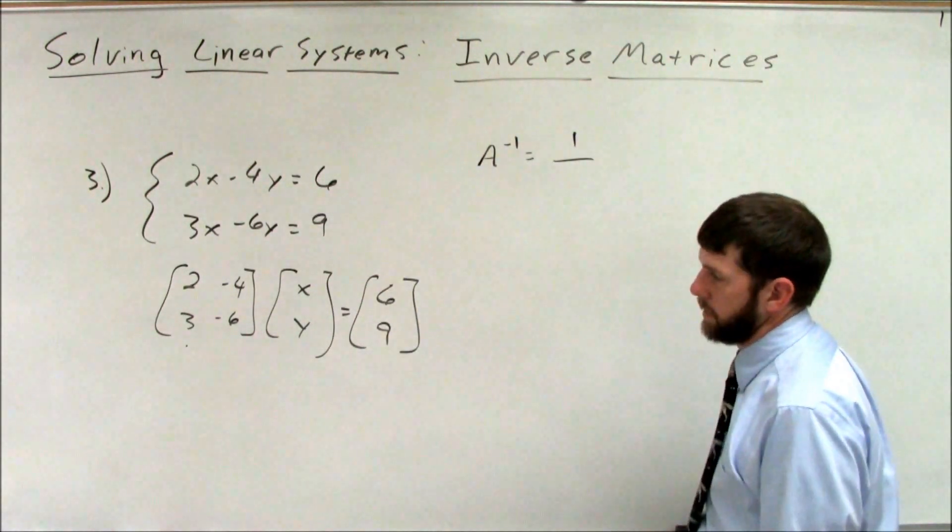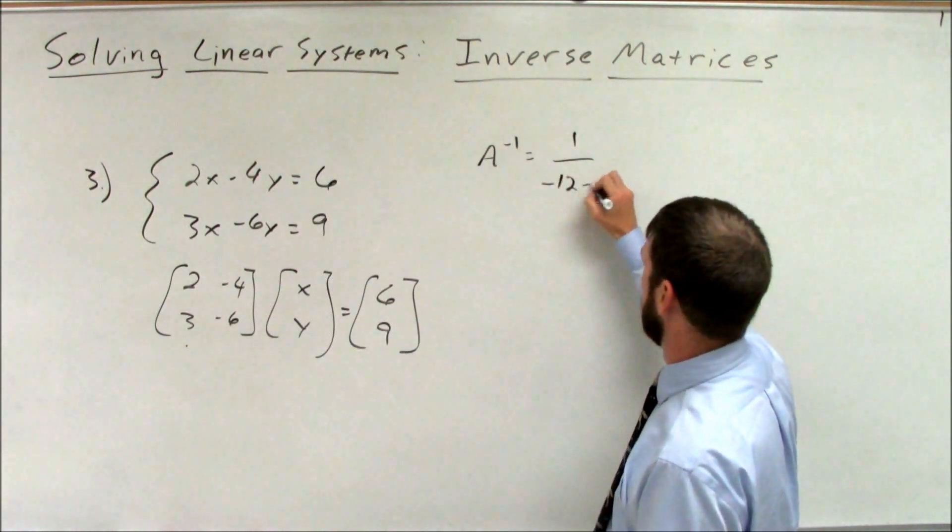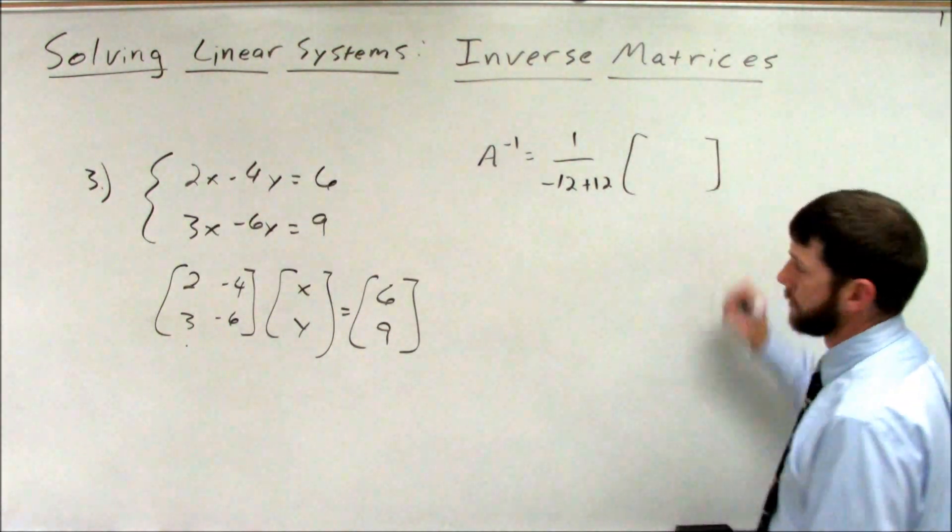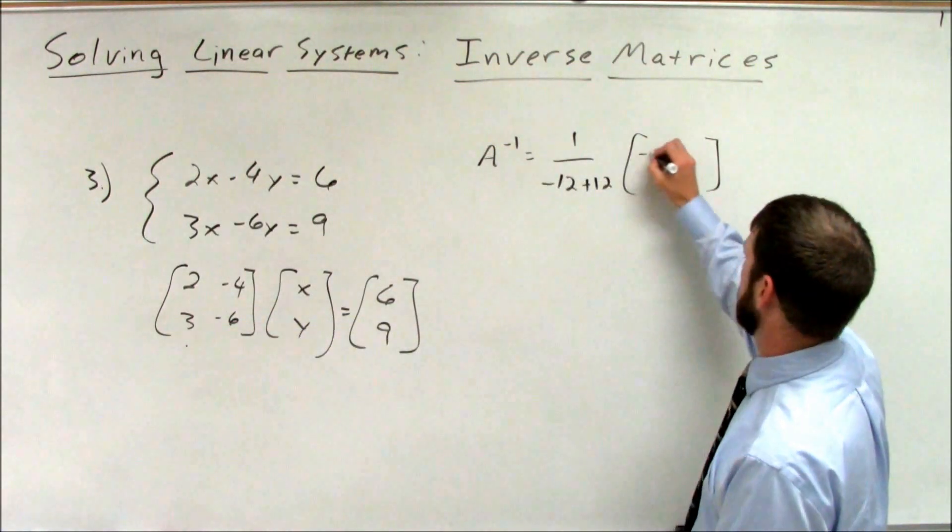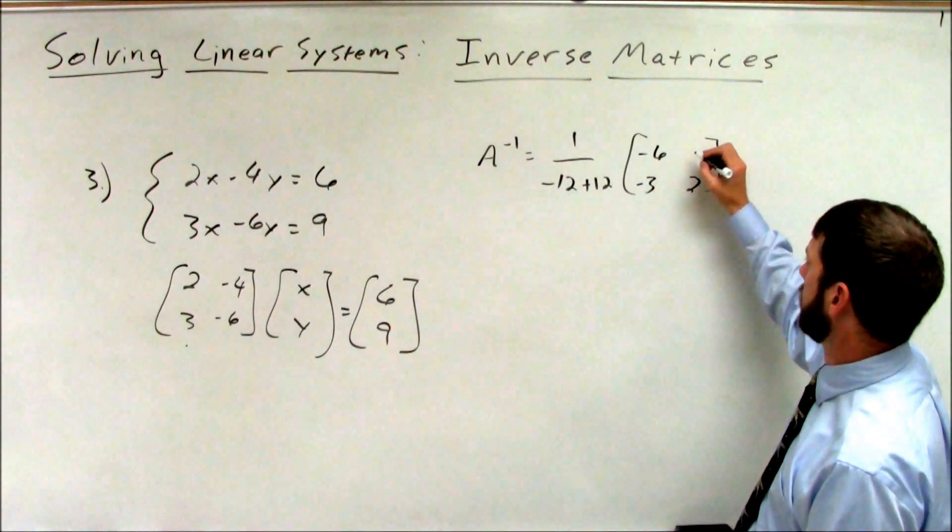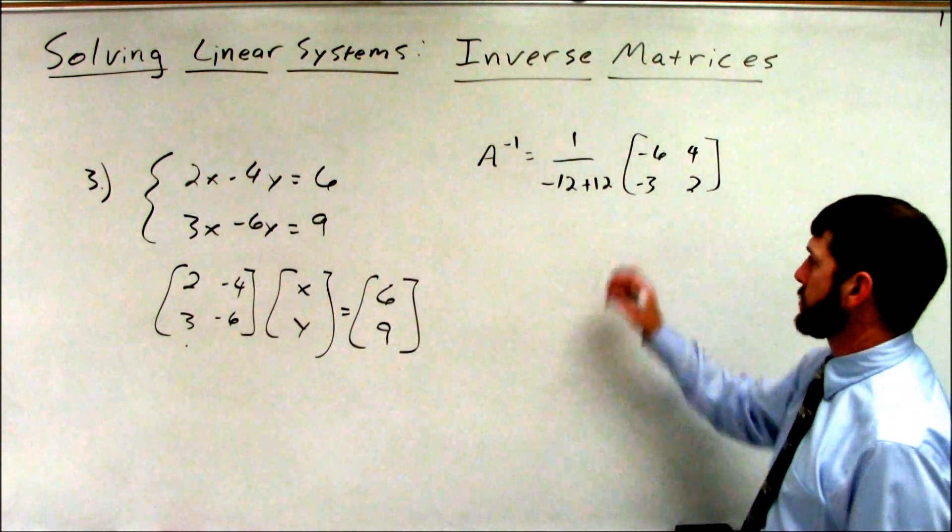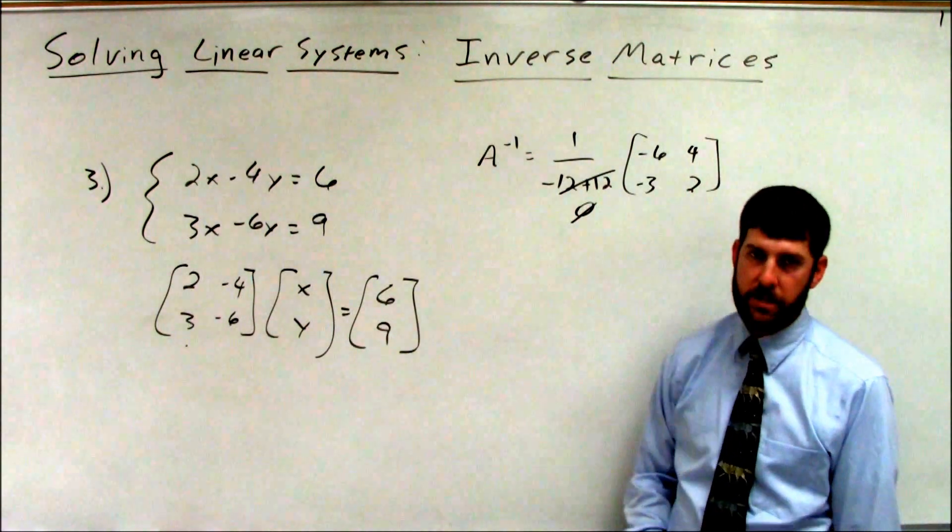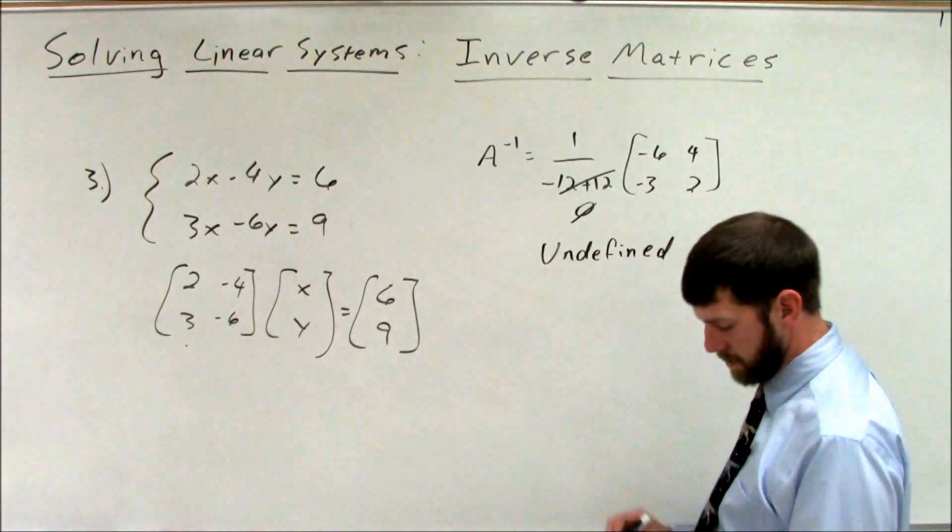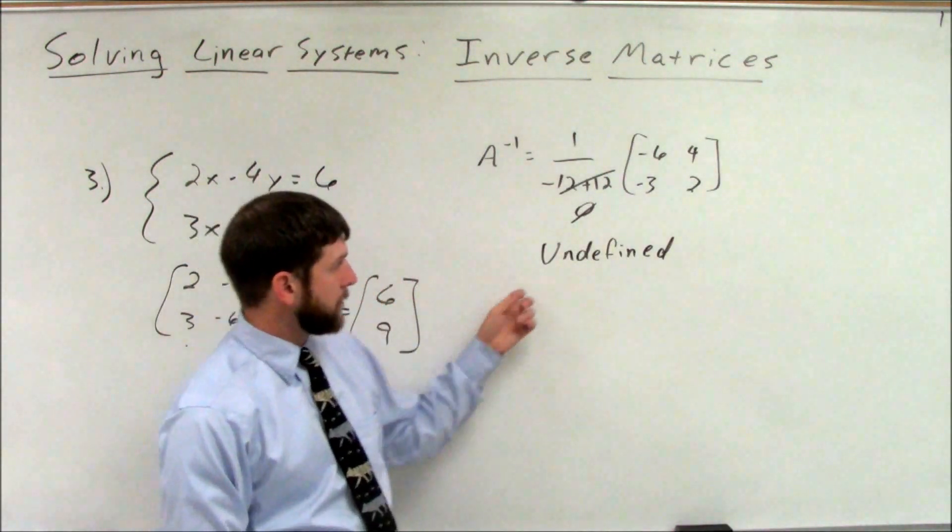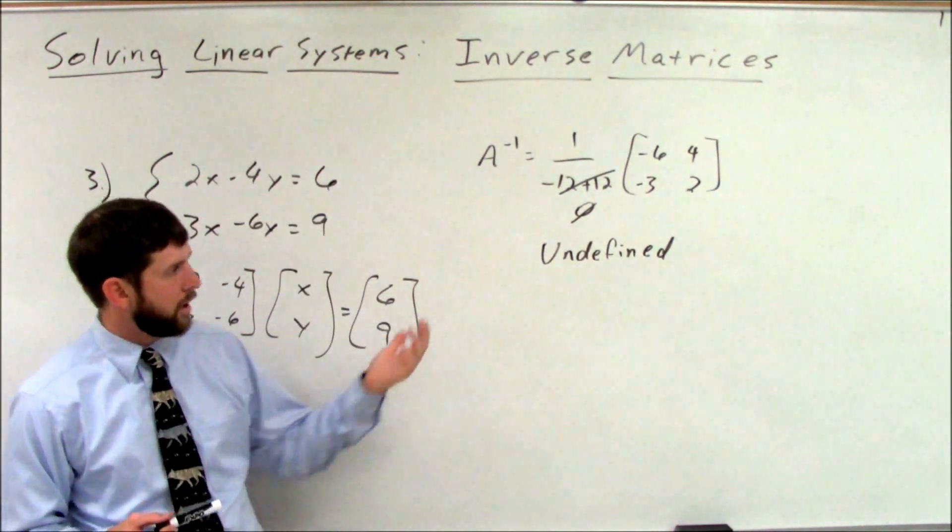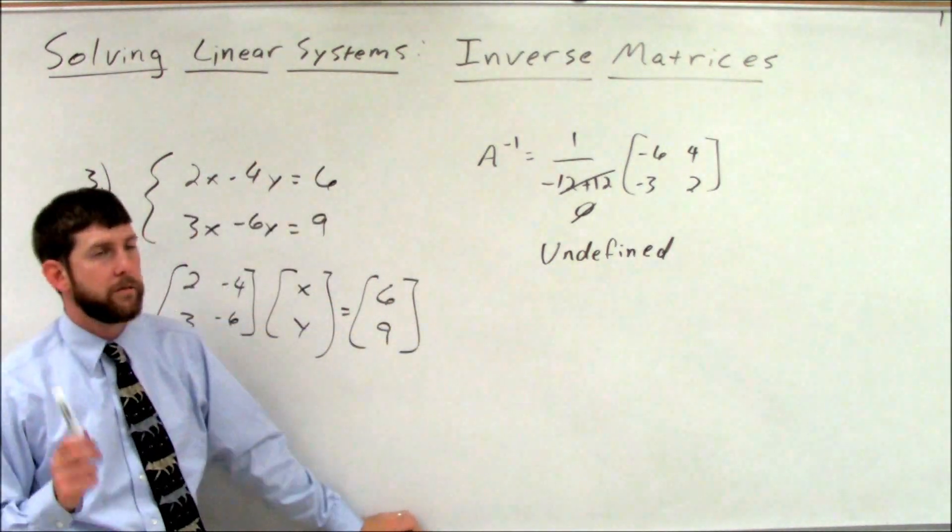1 over determinant. Negative 12 minus negative 12, which is plus 12, times the adjoint. So swap the left-hand diagonal. Change signs on the right-hand diagonal. Negative 12 plus 12 is 0. And what is 1 divided by 0? That's undefined. This system is not defined. So our problem here is we don't have an inverse in this. So what could be causing us to not have an inverse?